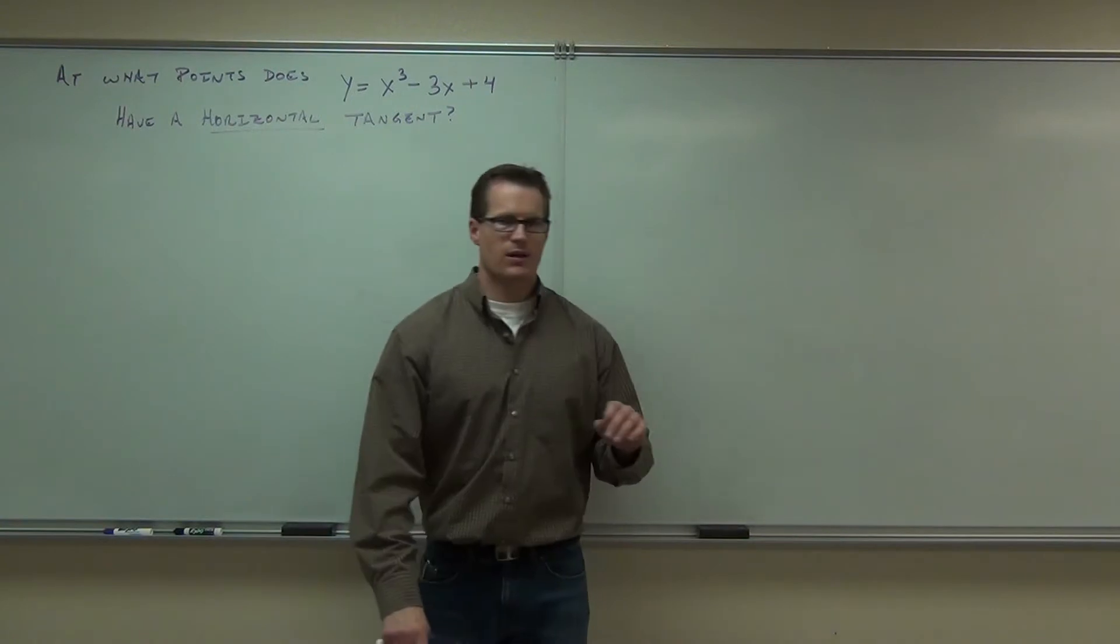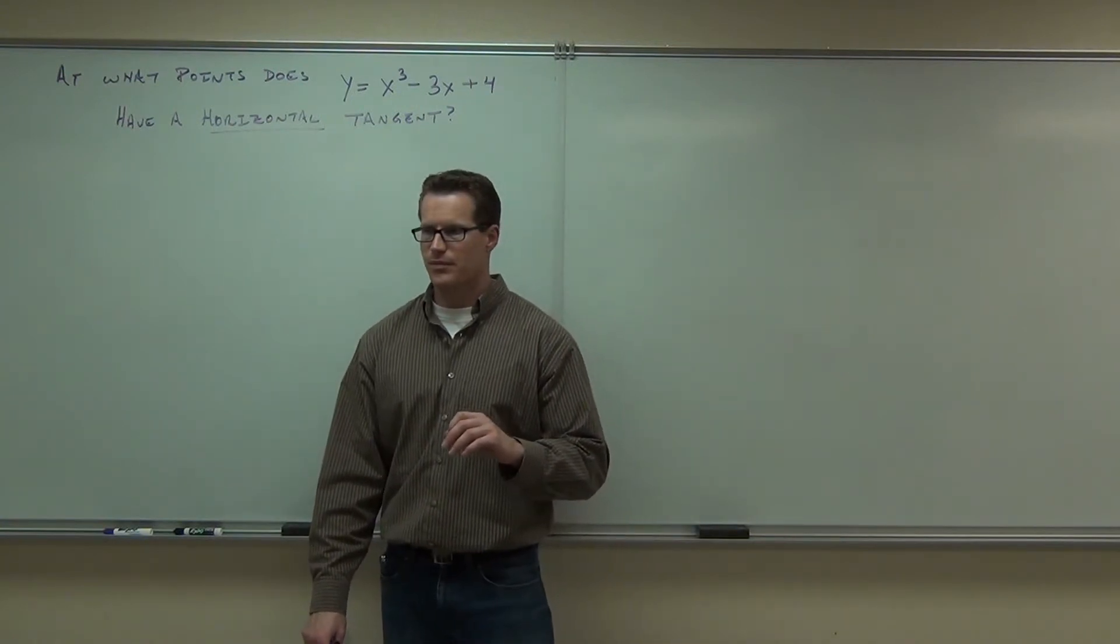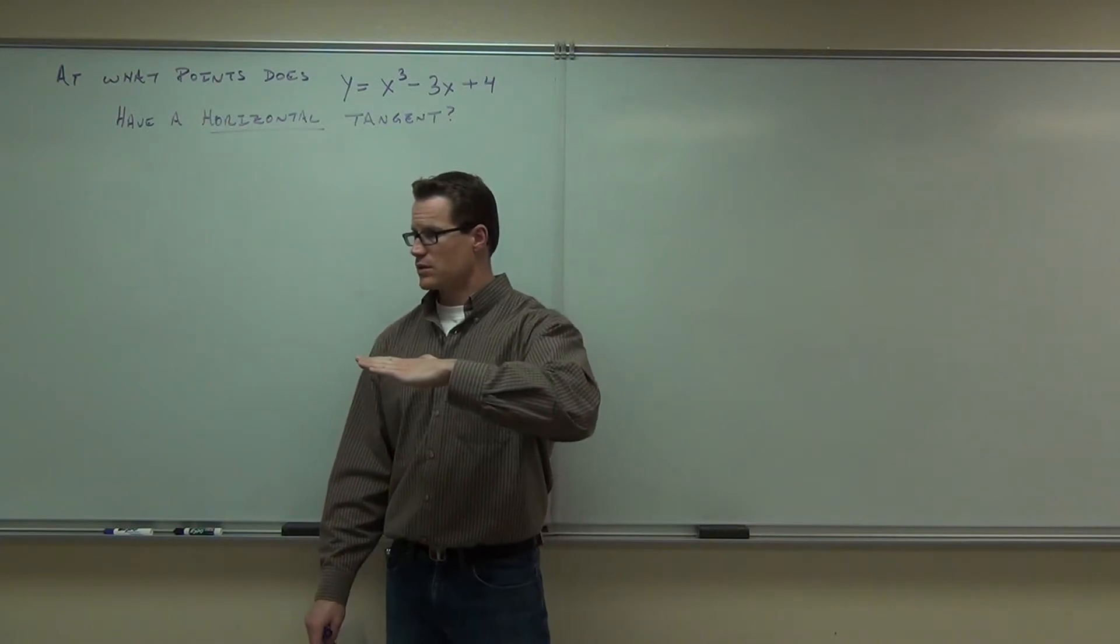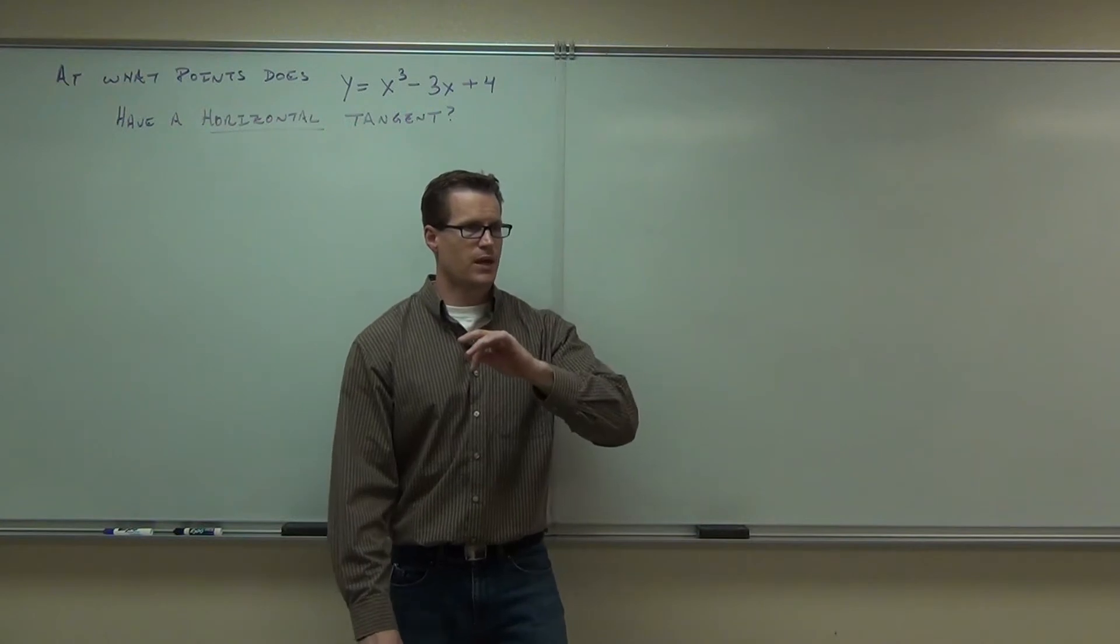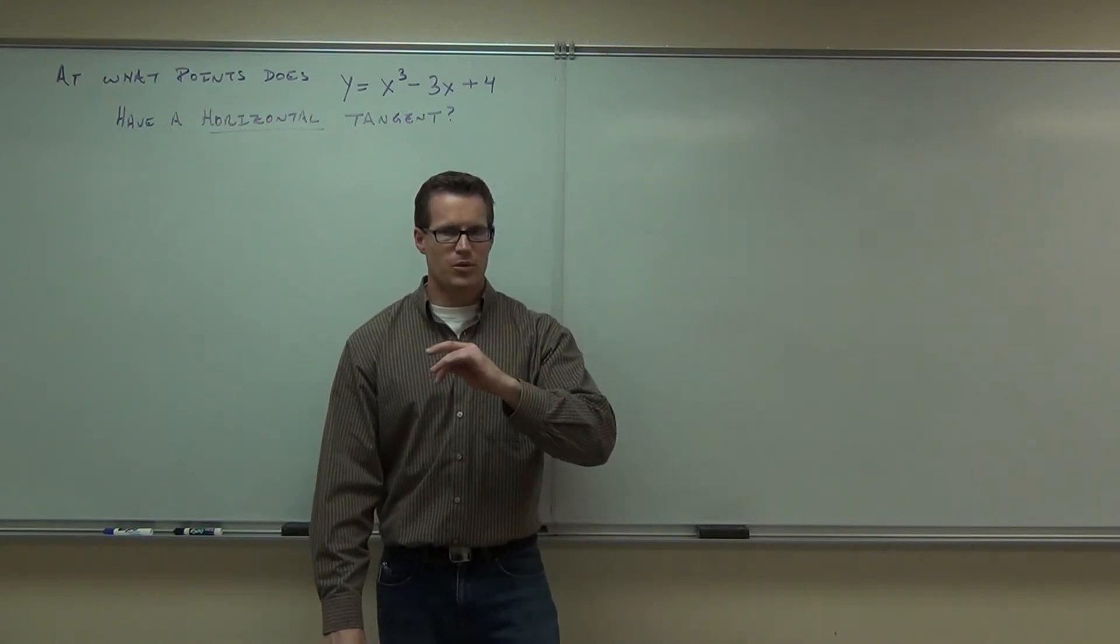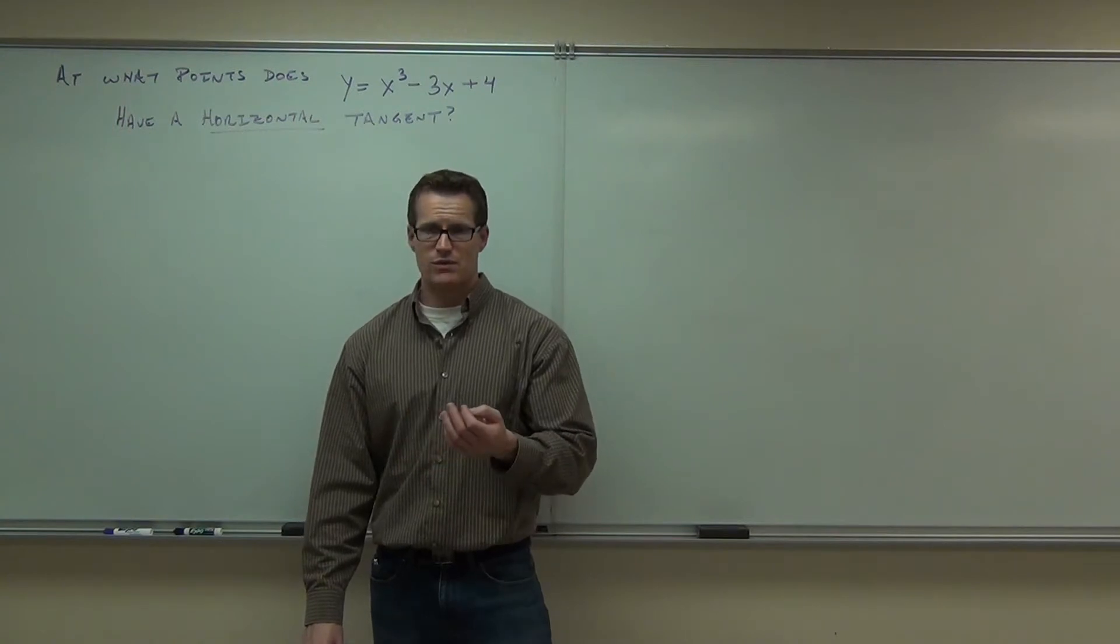Firstly, what do you know about a line that is horizontal, something about its slope? Slope would be zero for a horizontal line, true? So if we were trying to look for lines that are horizontal to our original function, how do you find the slope of the original function? A derivative would give you slope, yeah, absolutely.